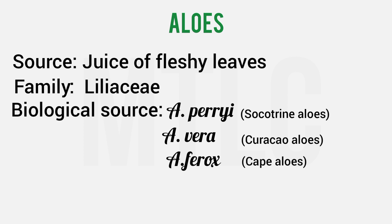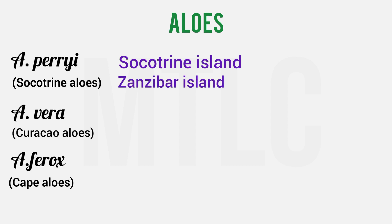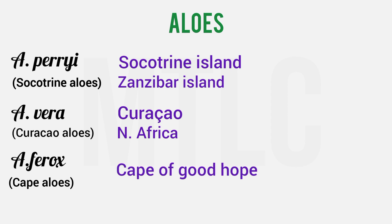Let's see a comparison. For the geographical source: socotrine aloes comes from socotrine island and Zanzibar islands. Curacao aloes comes from West India — the place called Curacao. Apart from that, North Africa also has it. And cape aloes comes from the Cape of Good Hope in South Africa.